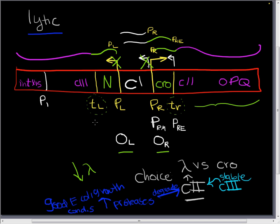So higher levels of proteases due to good E. coli growth conditions leads to the conditions that give us the lytic cycle for our bacteriophage. And this makes sense.